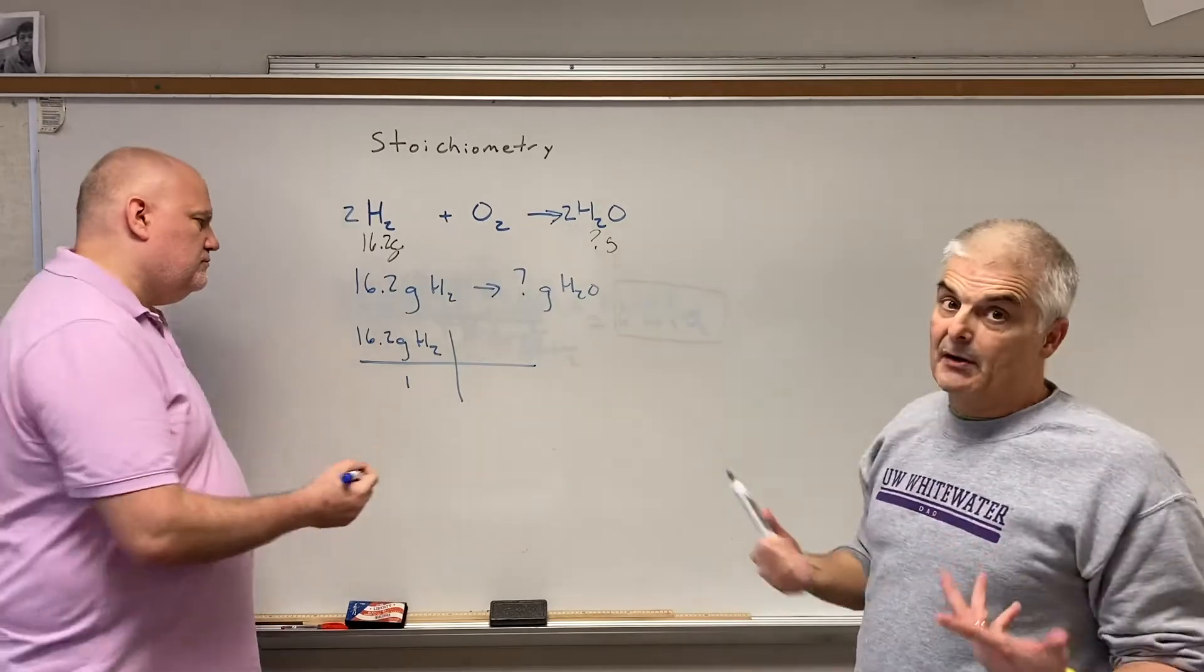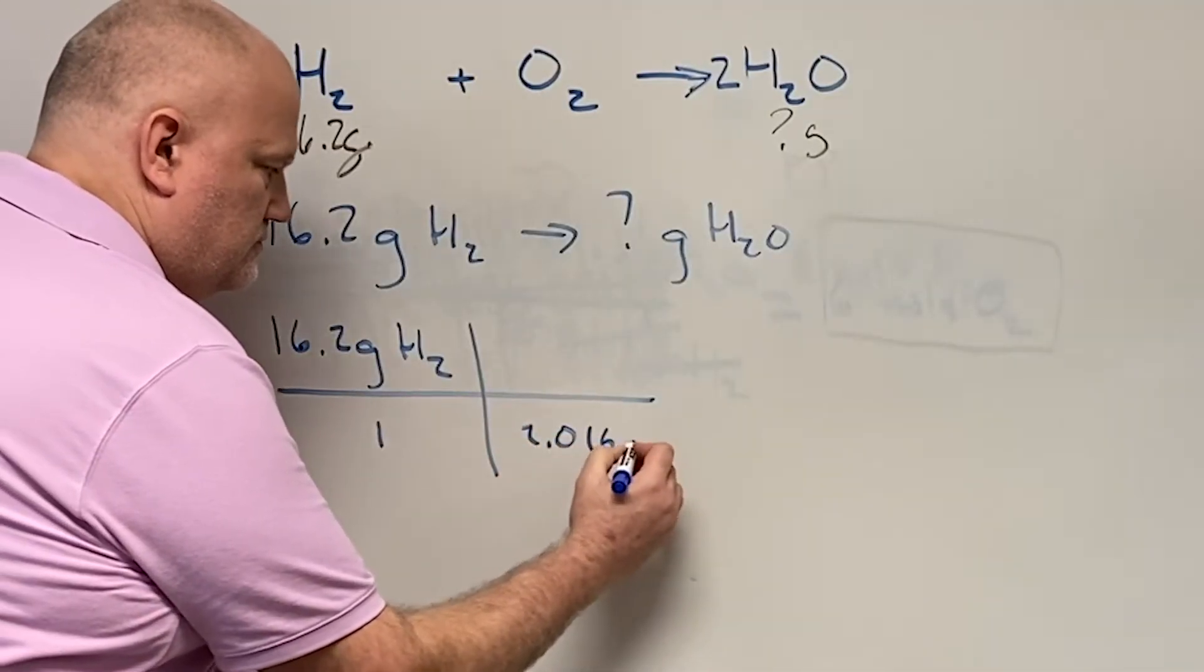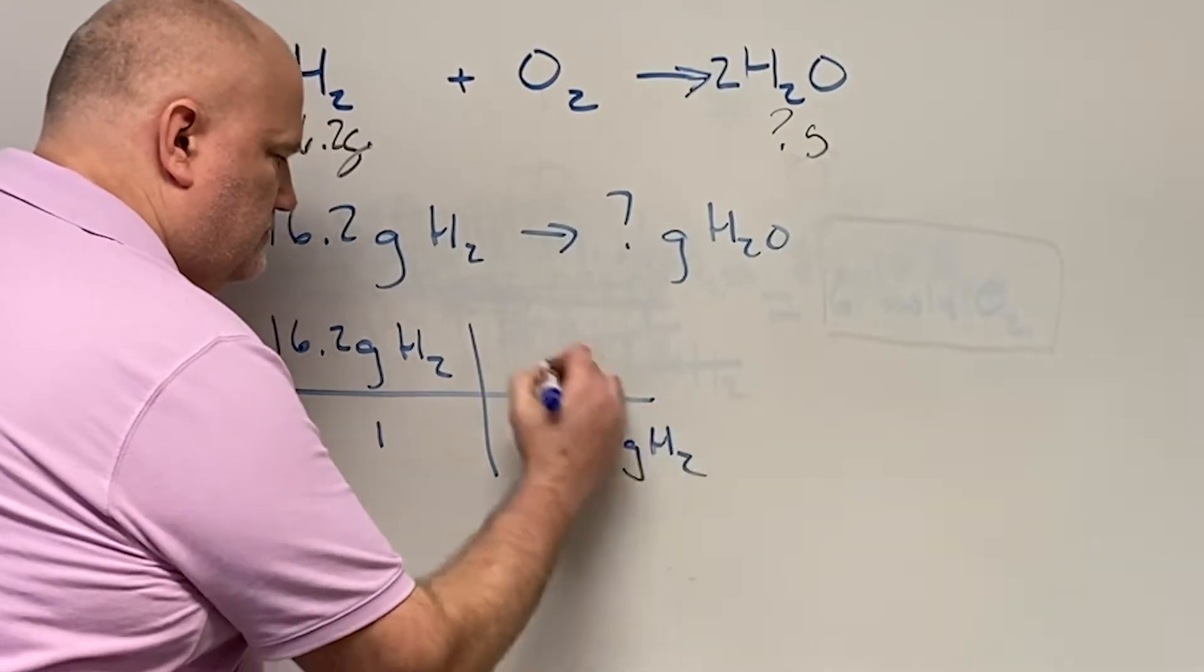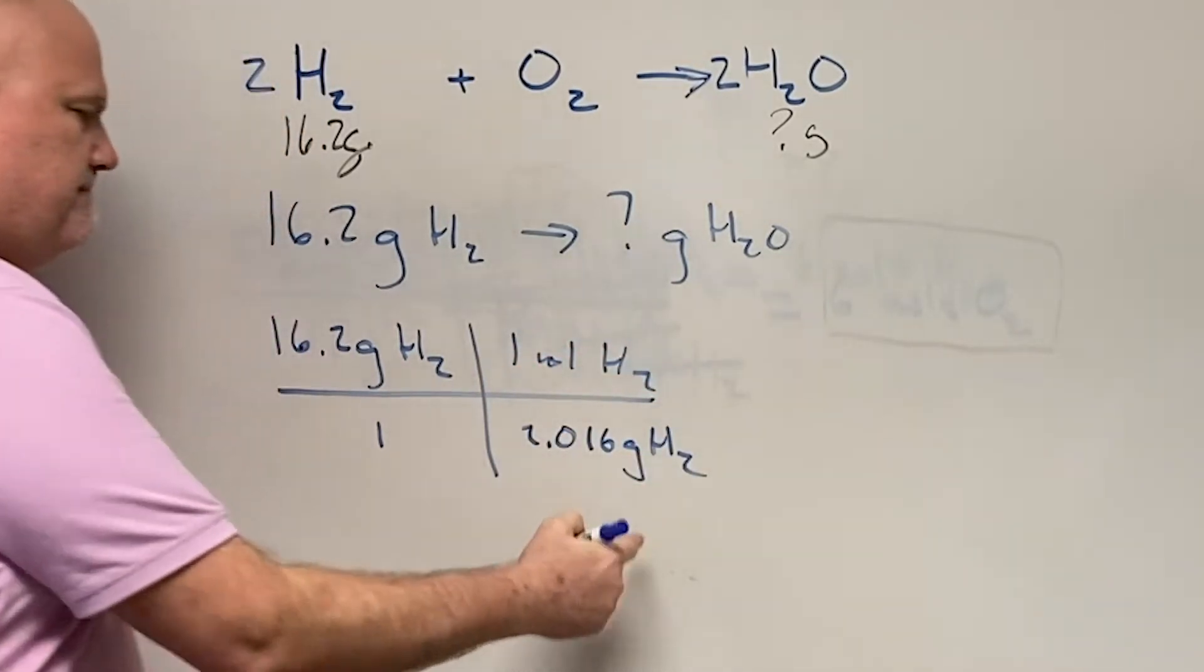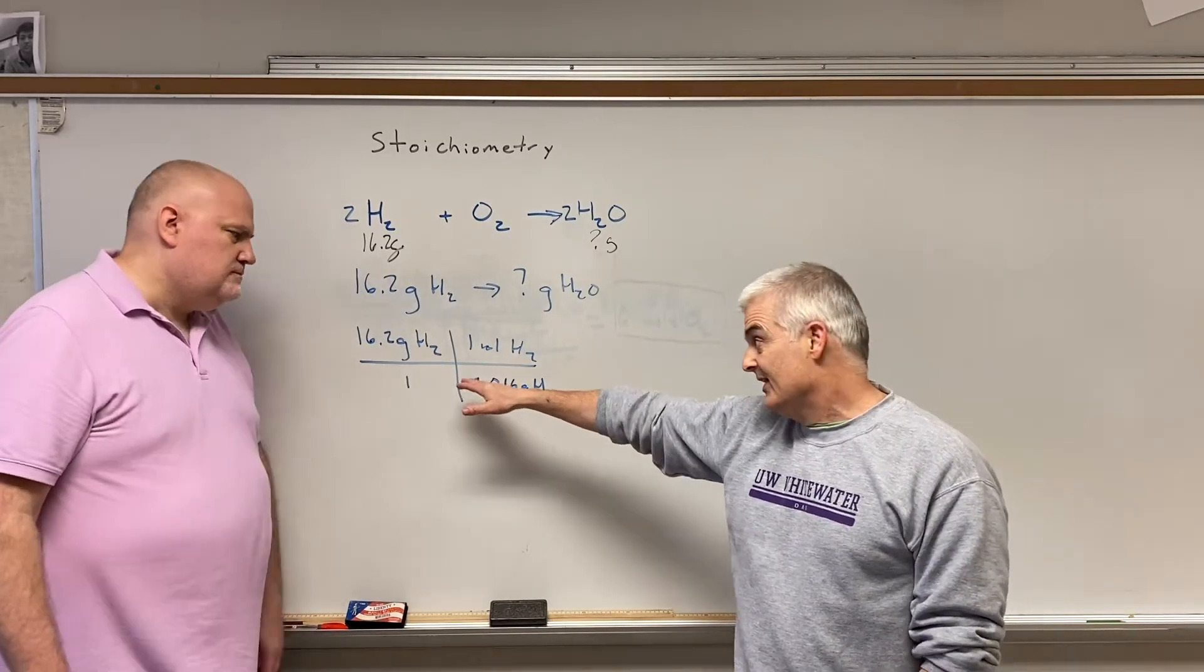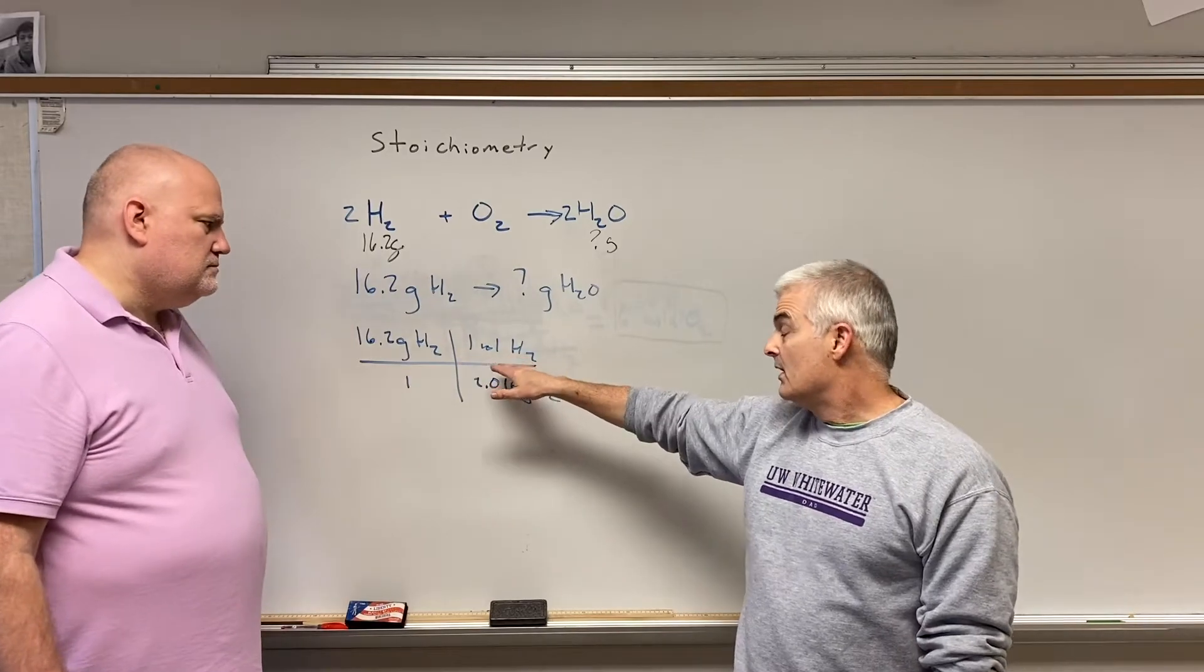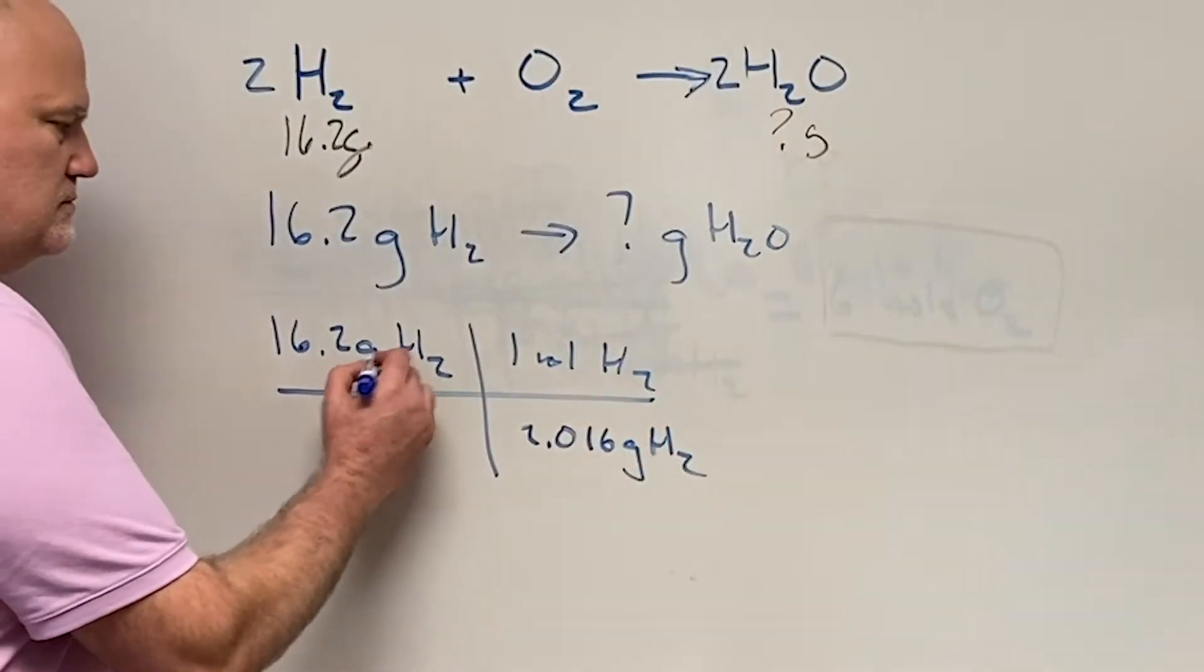We've done this before. So we look up on our periodic table, and we find that hydrogen has a mass of 1. So it's 2 grams for every 1 mole. Now why did I put this grams on the bottom? Because you need the grams to cancel, and you were actually super active at 2.016. That's fine. Roughly 2 grams for every 1 mole, all right? And what can cancel now? Grams cancel.